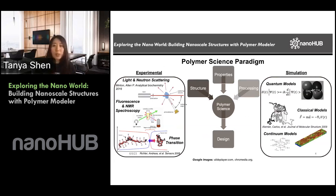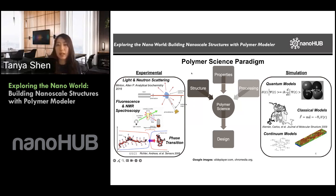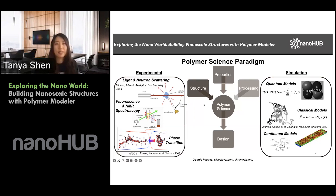In terms of polymer science investigations, polymer materials only have a history of a few hundred years, unlike metals which have existed in nature for a long time. In order to better design polymer materials, we need to understand the details of how the structure looks, what properties correspond to different structures, and how to make these structures — which we call processing. These three areas are the main goals of polymer science, and this understanding helps us design and enhance polymer materials in the future.